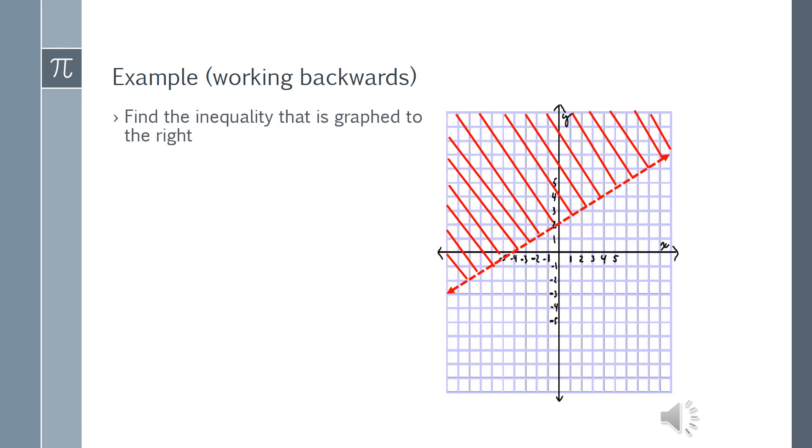Now, here's an example where you're working backwards. Find an inequality that is graphed to the right. Pause the video at this point to give yourself a chance to try and do it on your own. So first of all, we need to notice that it's a dashed line. So there is going to be no bar underneath the sign. We also notice that we're shading up. So it is going to be y is greater than something.